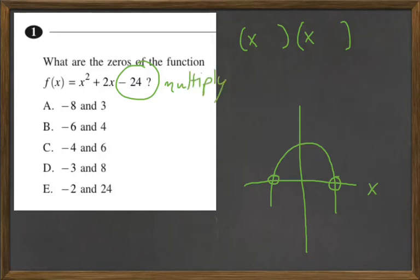But those same two numbers need to add up to 2. So then we start thinking, what are the factors of 24? Well, it would be 1 and 24, 2 and 12, 3 and 8, 6 and 4.